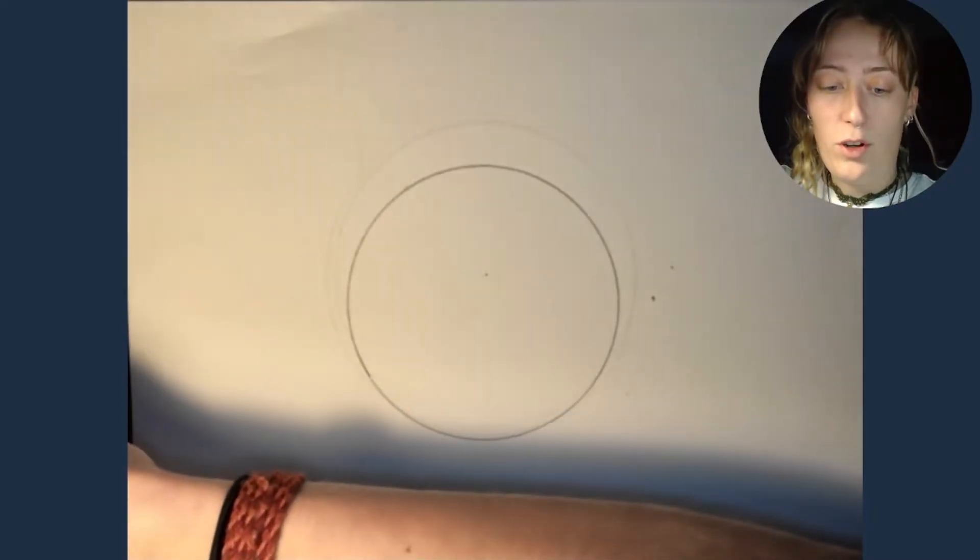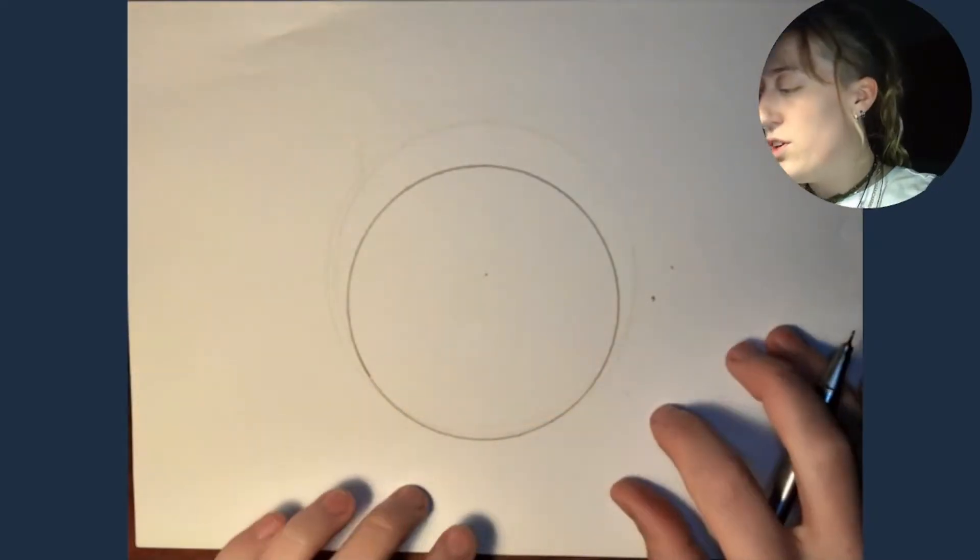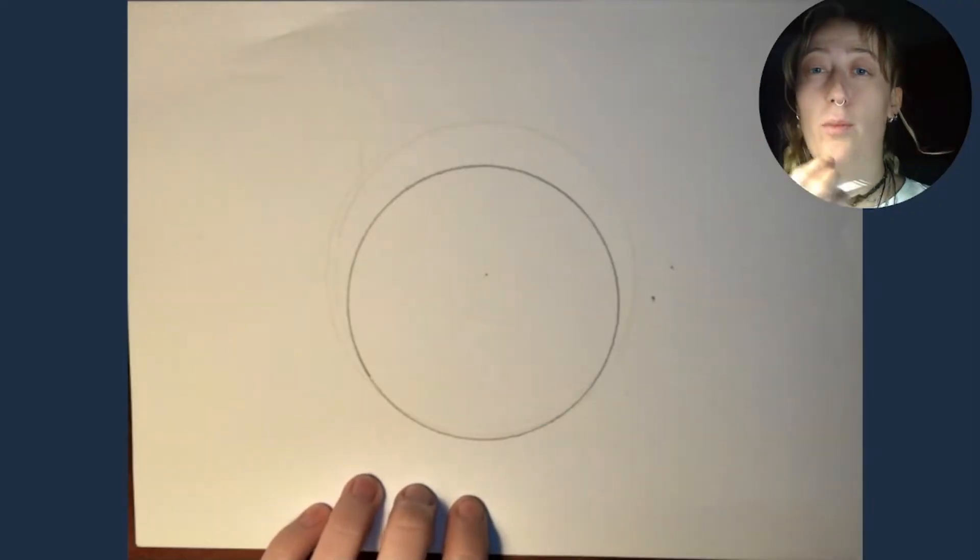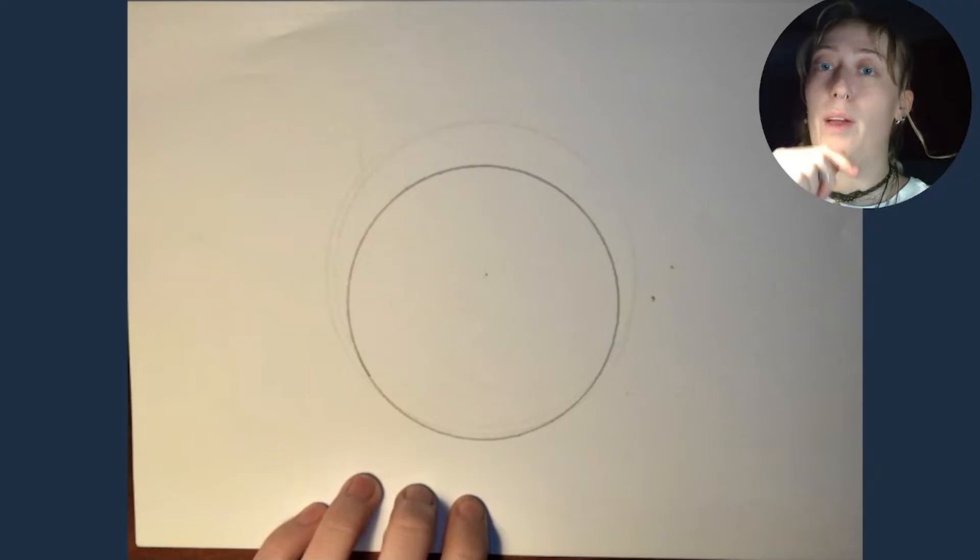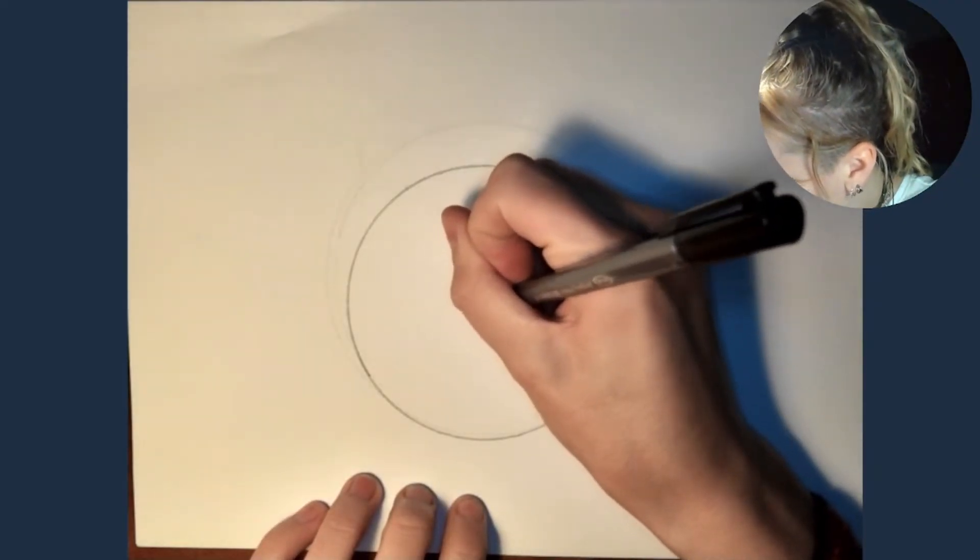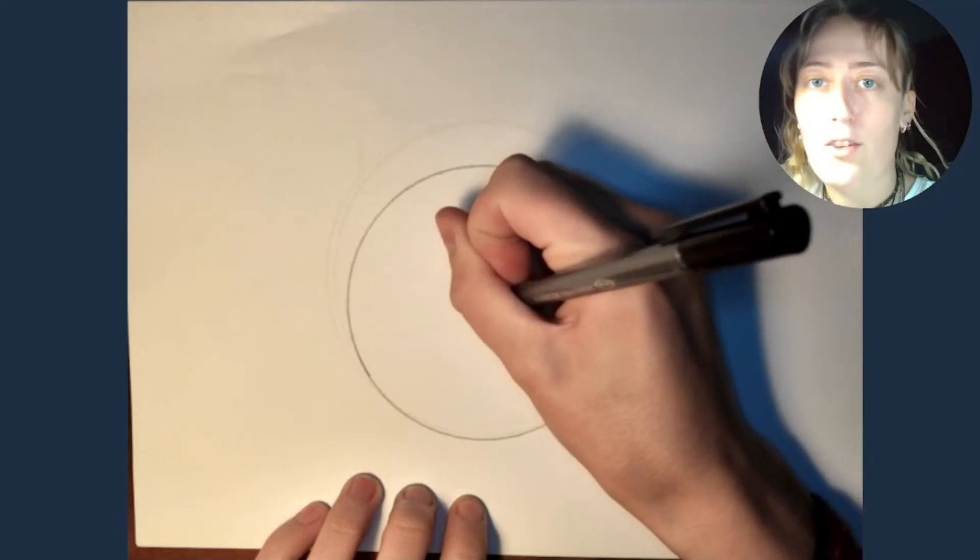So the first thing I want you to do is I want you to take your pencil and I want you to mark out very clearly the center of the circle. So the part of the compass punctured a hole in the paper, I want you to do a big mark around that. So mine one was about here. Here's the center of my circle.